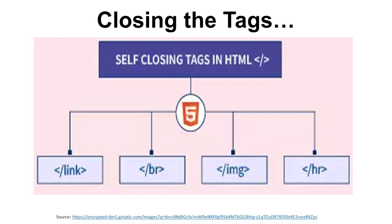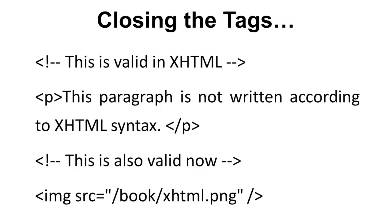Self-closing tags in HTML — such as link, br, img, and hr — must be self-closed in XHTML. This picture gives a deep insight about the importance of closing the tags. Here we have a paragraph with a proper closing tag, making it valid in XHTML. The image tag with src equals book-xhtml.png is also closed, making both the image tag and paragraph tag valid.